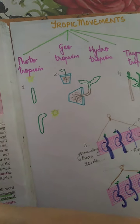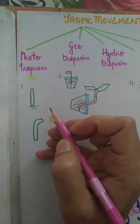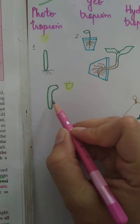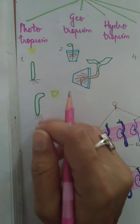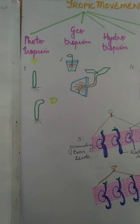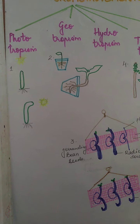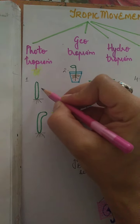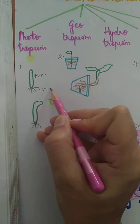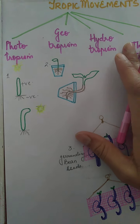What about the roots? Roots are generally negatively phototropic — they never grow towards the area where light is coming from. They move away from the source of light and grow into the soil in the direction where no light is present. So shoots show positive phototropic movements and roots show negative phototropic movements.